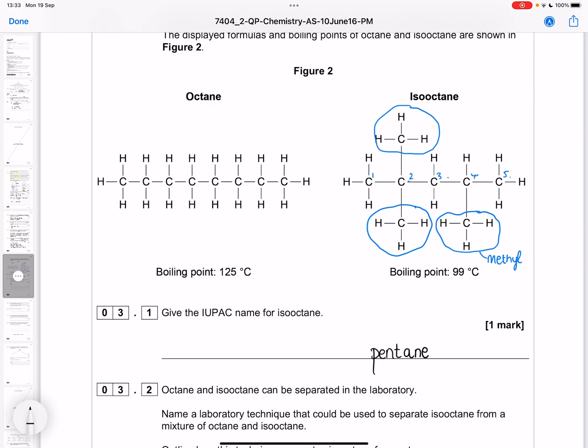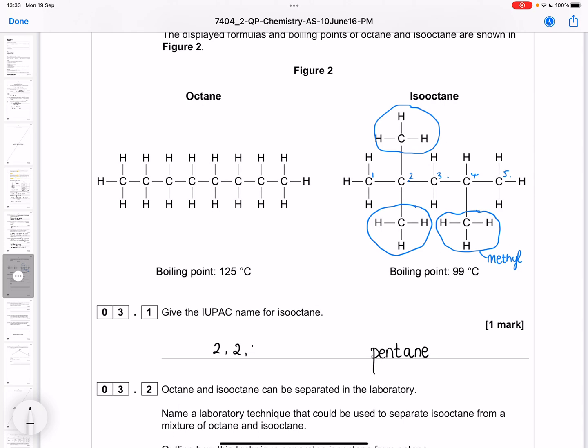They're all methyl groups and we need to give their location. The first two are on number 2, so we've got 2, and another one attached to number 2, and a third one attached to number 4. There's three of them, so trimethyl.